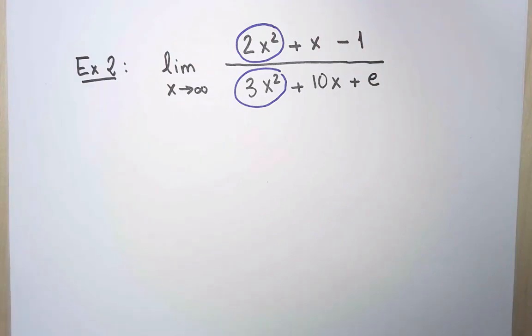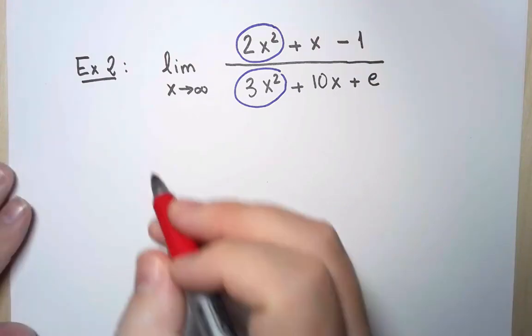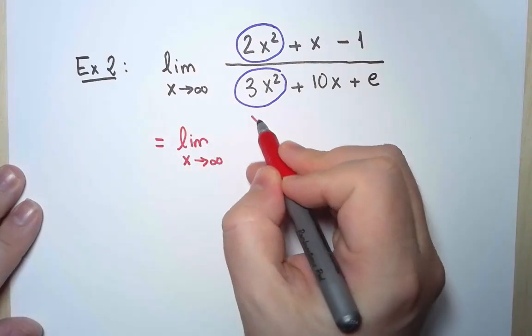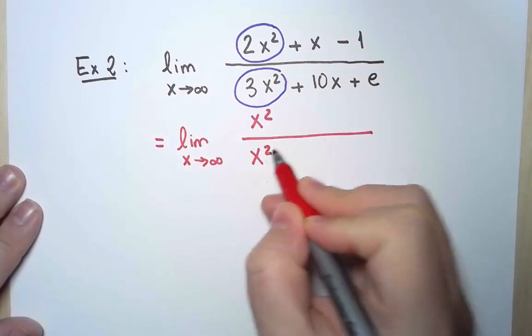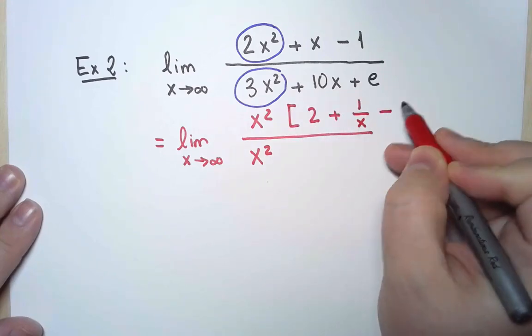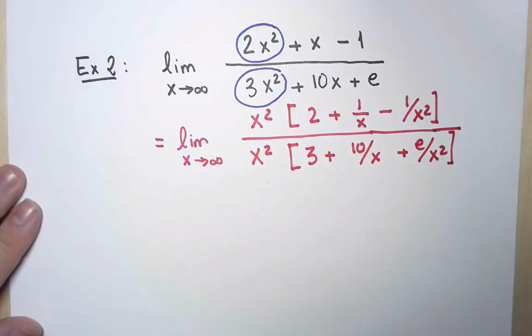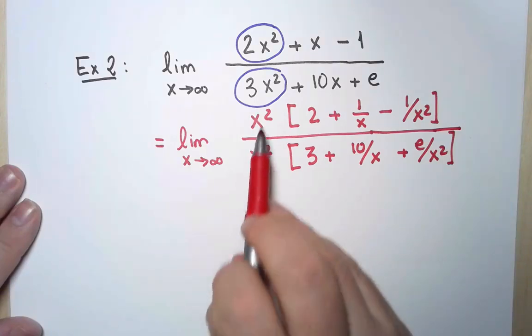Well, the justification is the same as before. I can factor out the term with the biggest exponent. At the top is x squared, and at the bottom, in this case, is also x squared. And in this case, I can cancel those two powers.